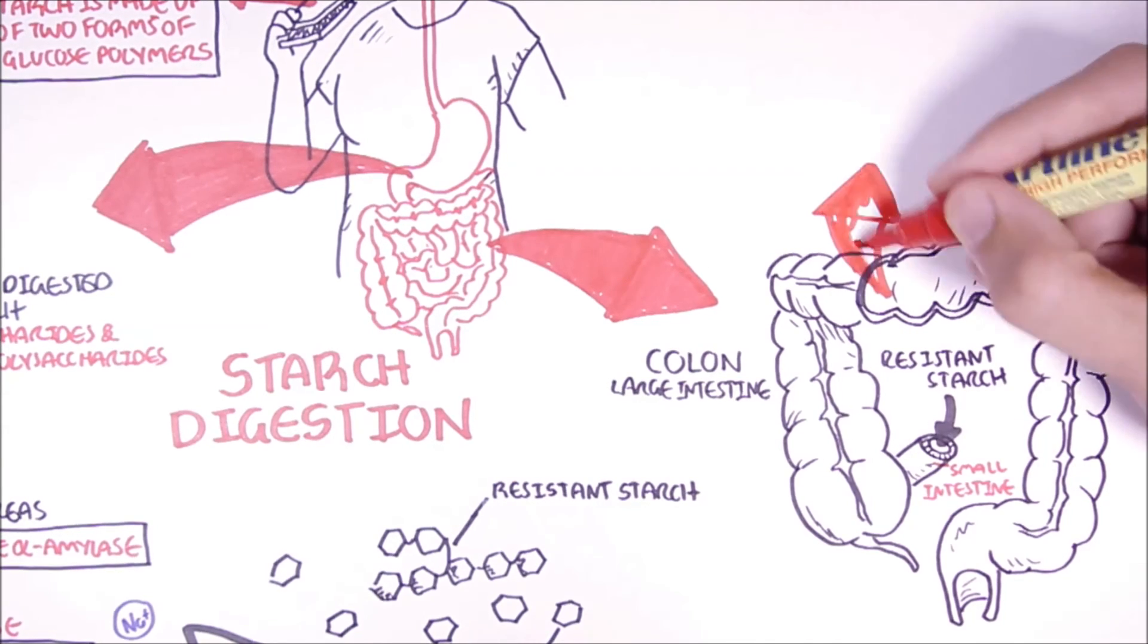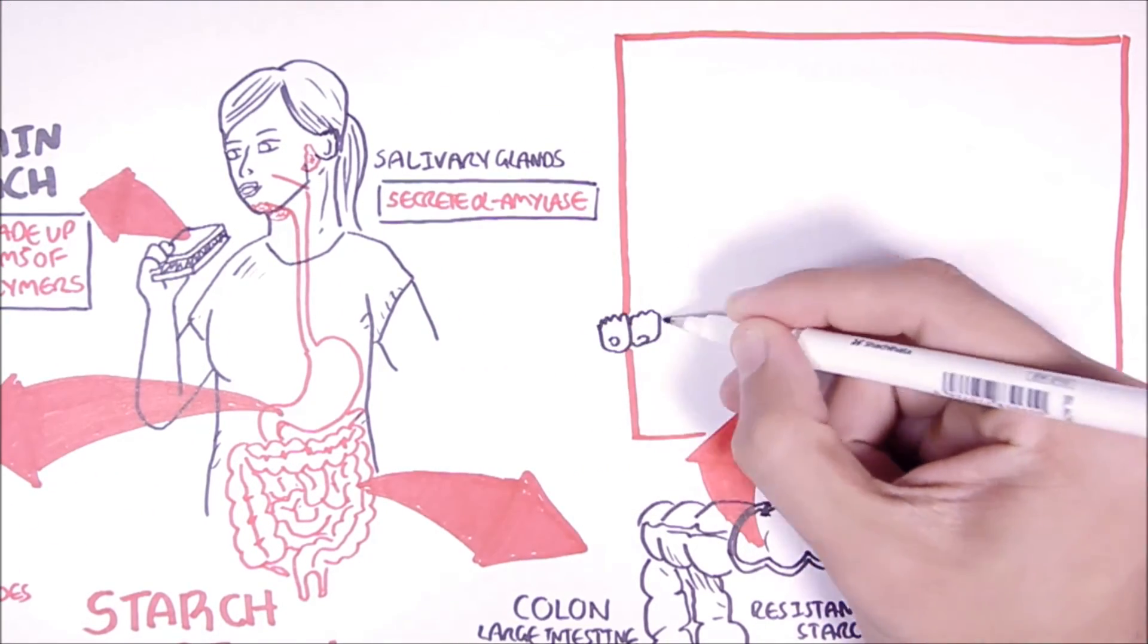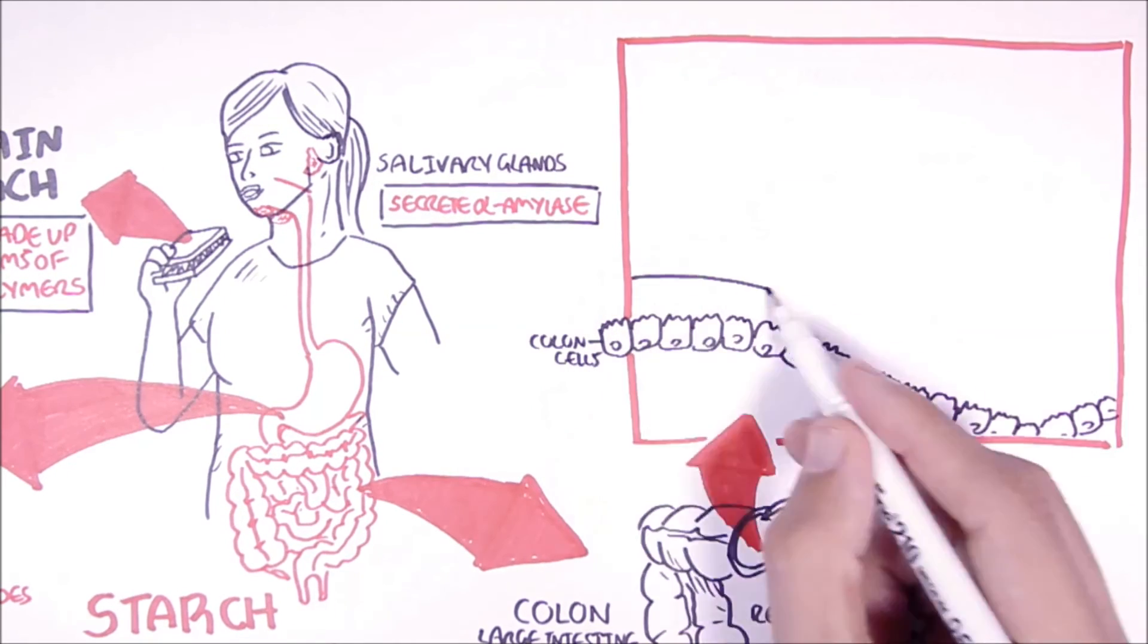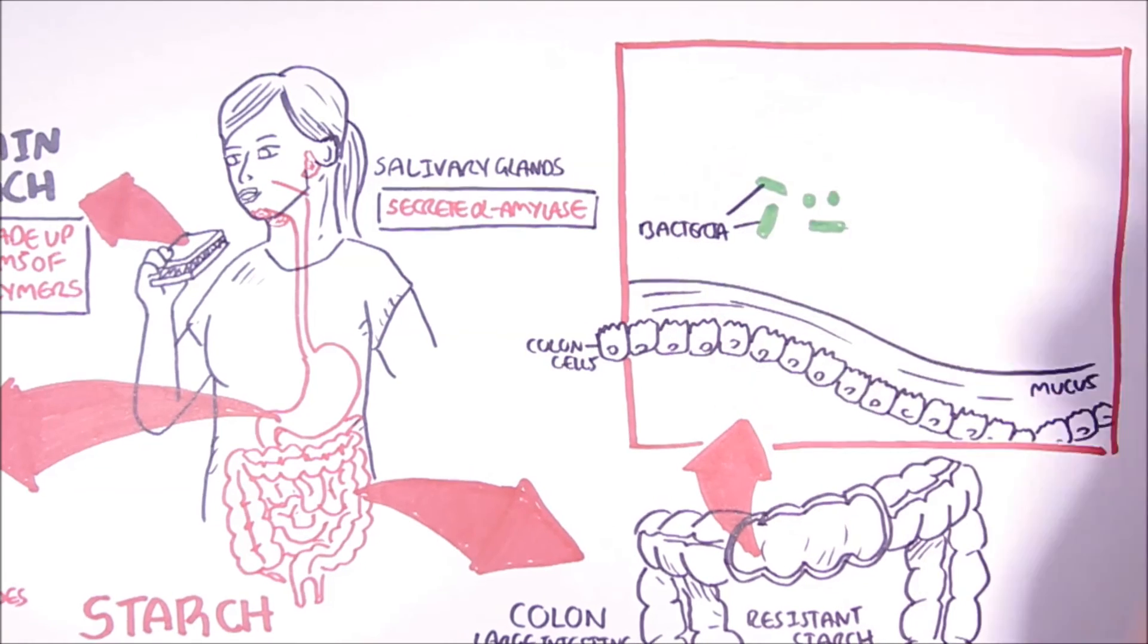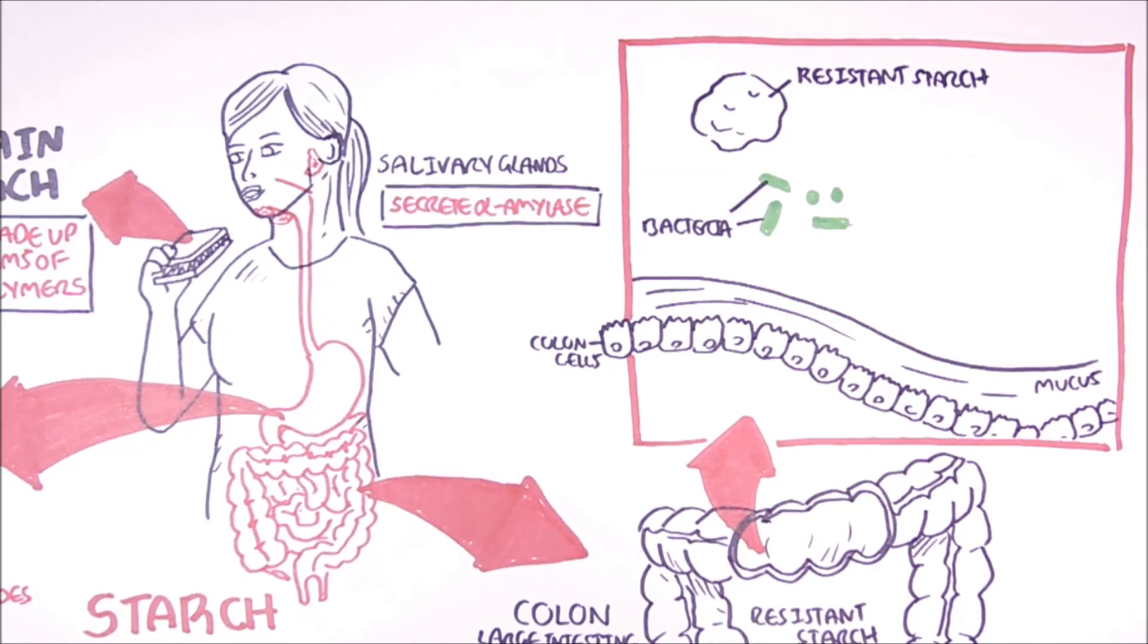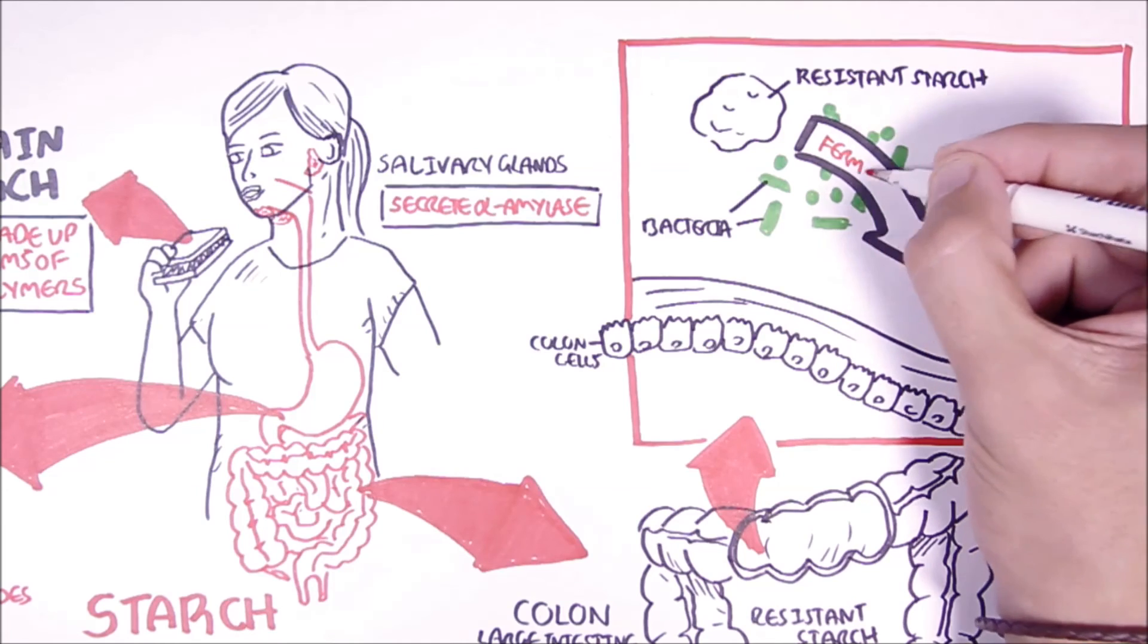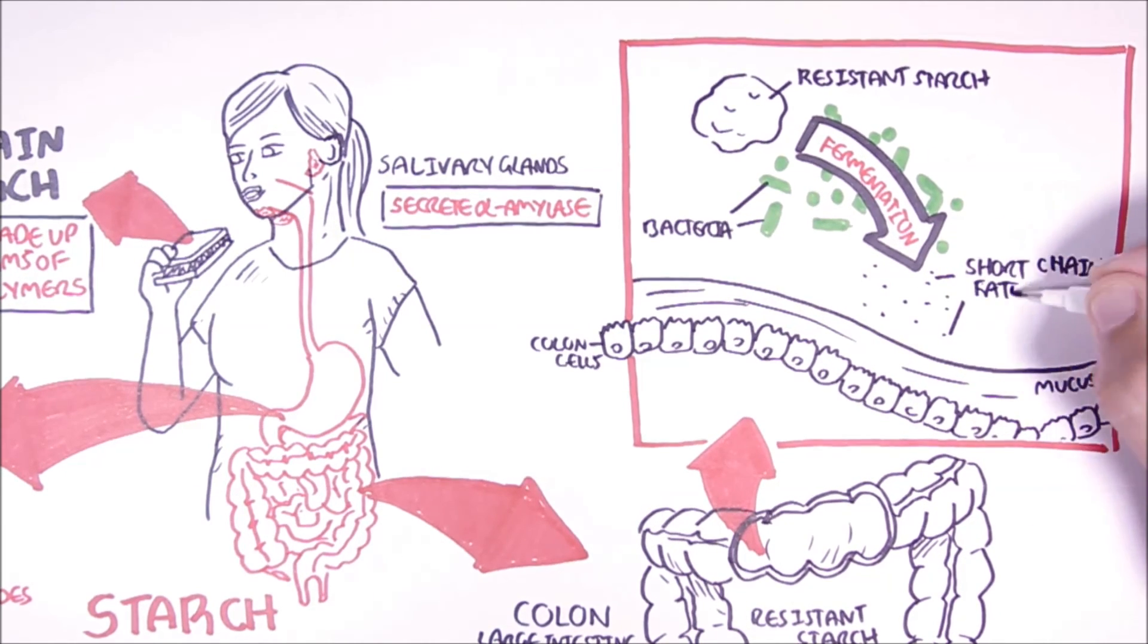So zooming into the colon, here we have the colon cells and the mucus. The resistant starch here will encounter all these bacteria within the colon. And through bacterial fermentation, the bacteria will produce byproducts such as short-chain fatty acids, which will be subsequently used by the human body.